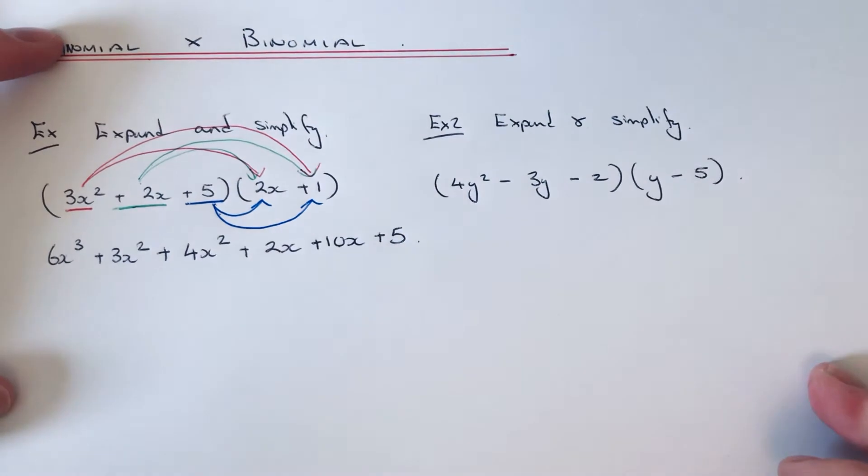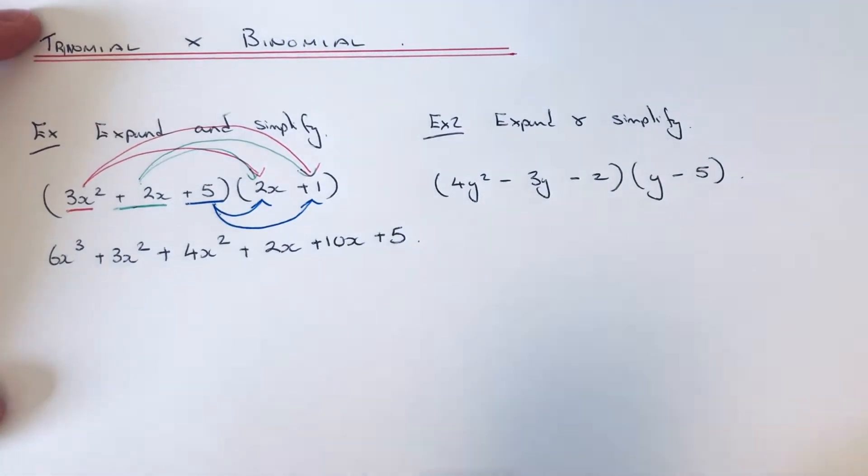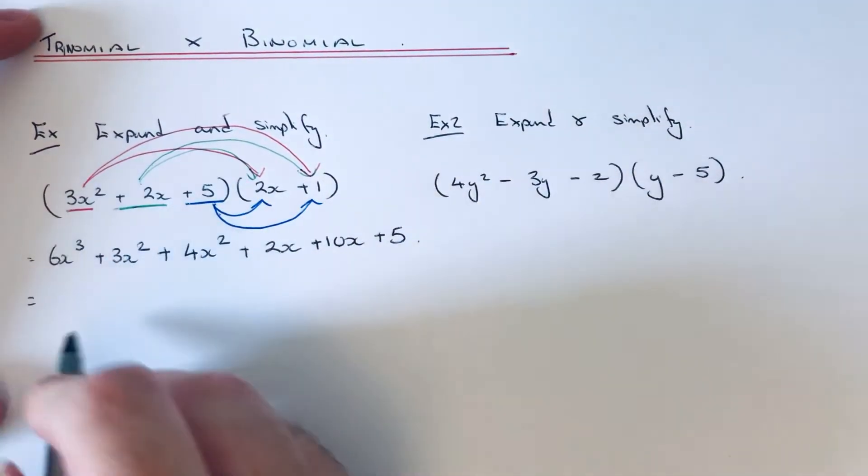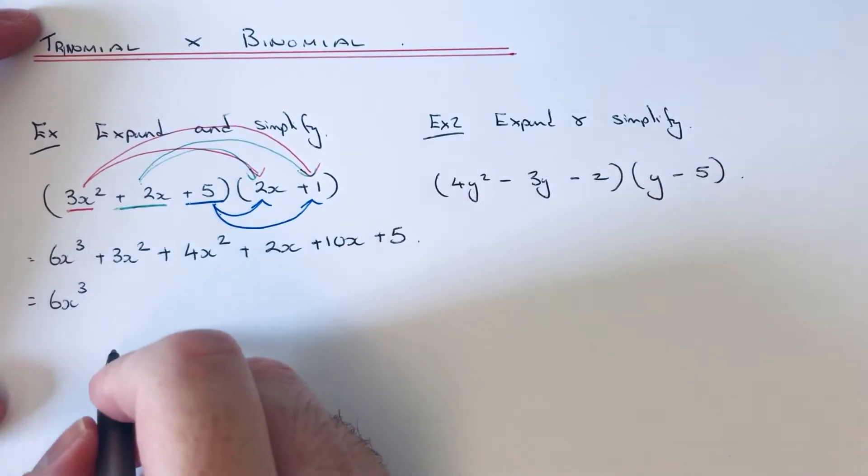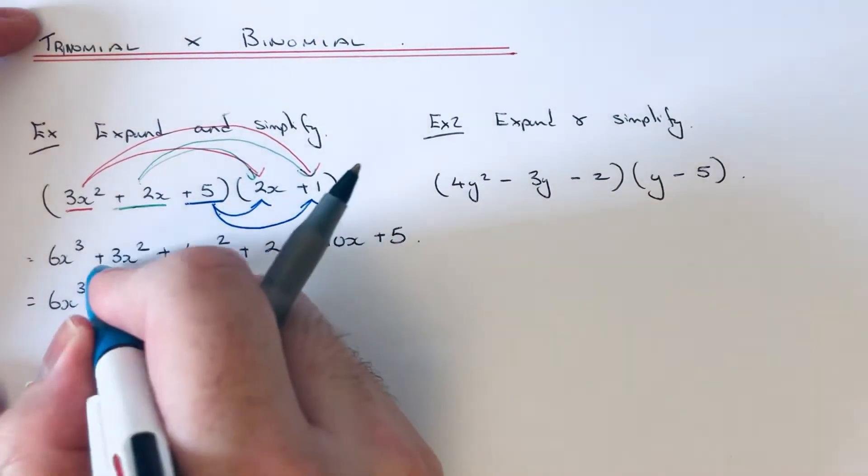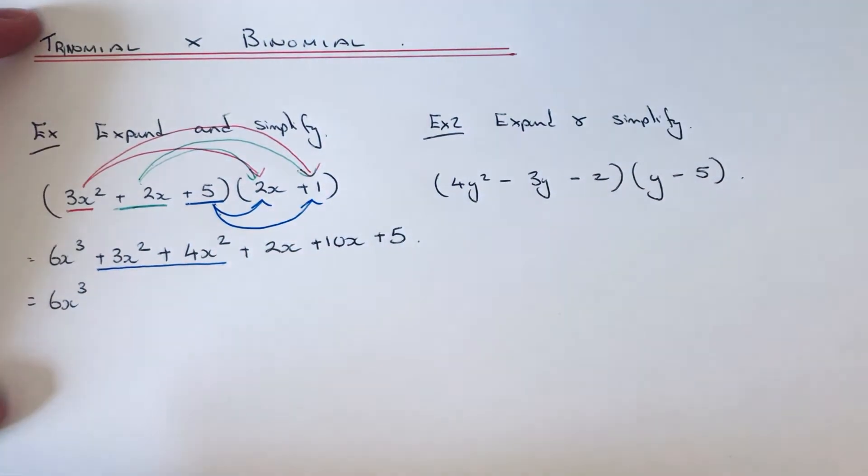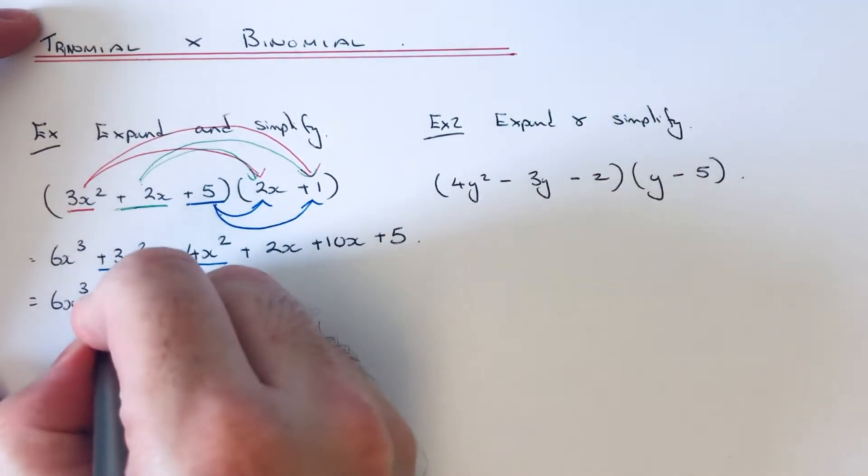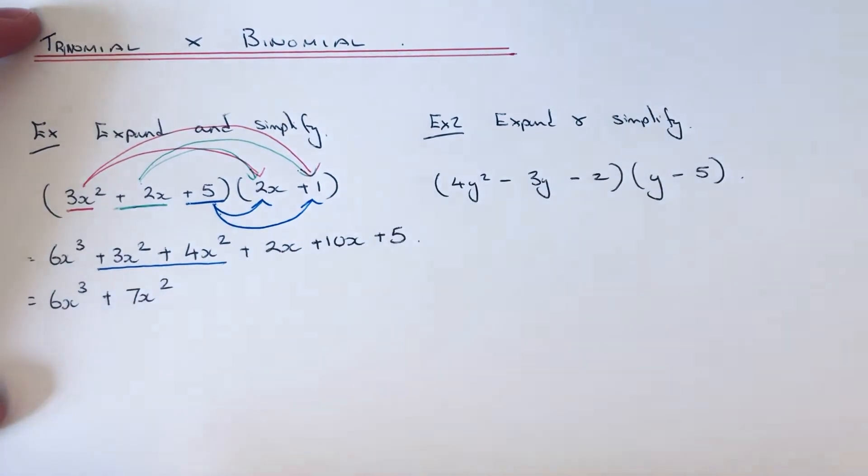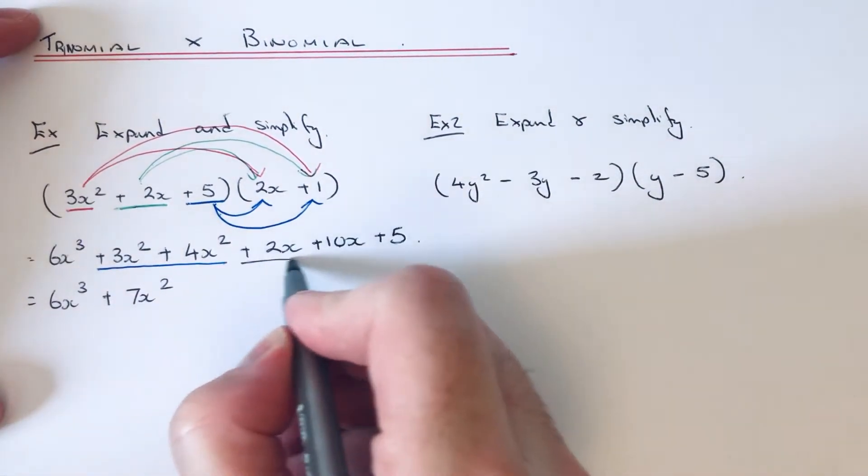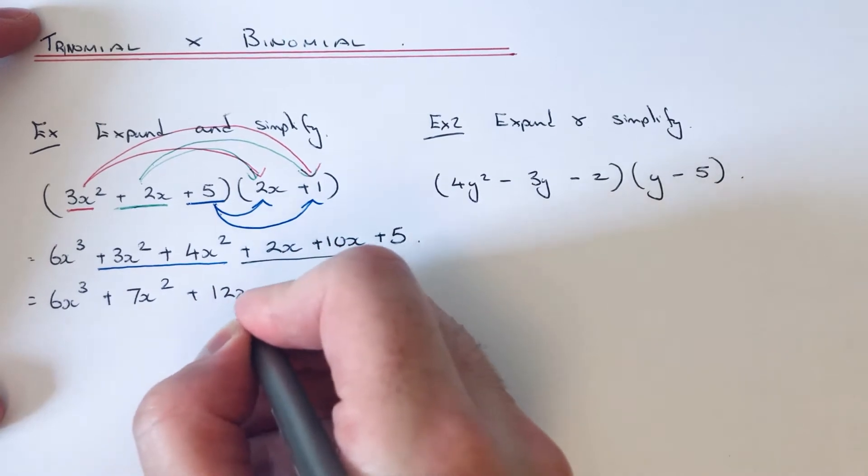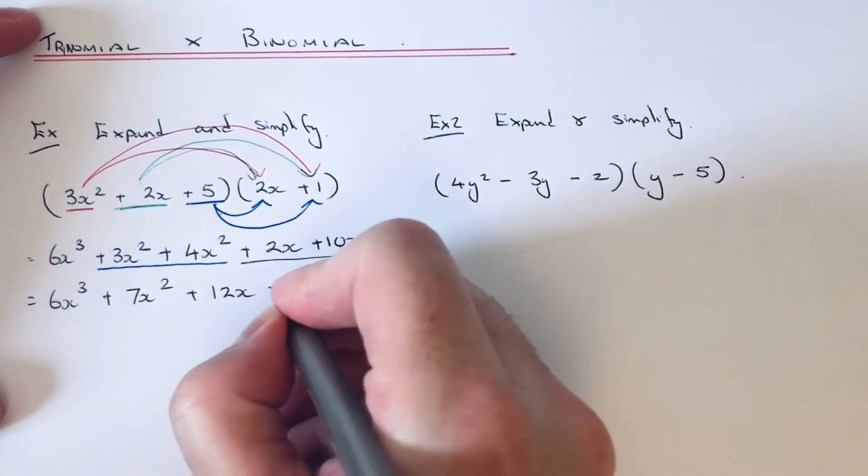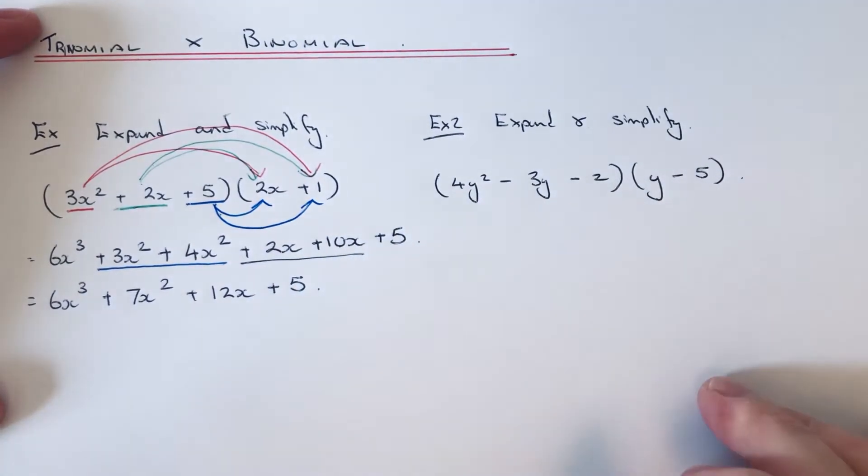All we need to do now is simplify this expression. So we haven't got any x³ terms to simplify, so we can simplify the x² terms to give us 7x², and we can simplify these x's to give us 12x. We've got no numbers to simplify, so just copy that down to the final line and that is our final answer.